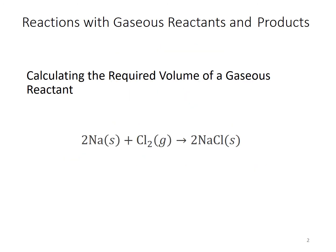So here's an example of this. You have reactions calculating the required volume of a gas reactant. So here we have sodium metal with chlorine gas forming sodium chloride, 2Na(s) + Cl₂(g) → 2NaCl(s). So you could have something like a certain amount of grams of sodium, and we're going to do a normal sort of conversion like we've seen before.